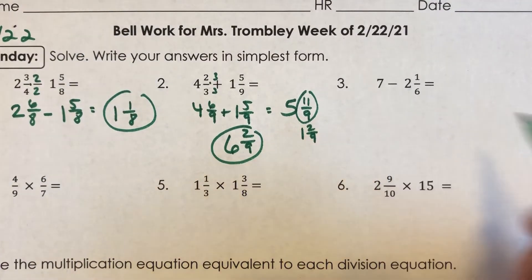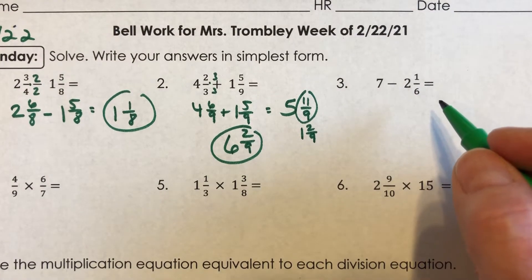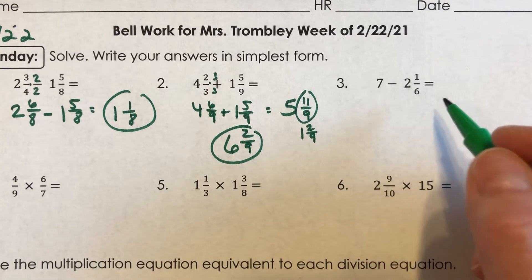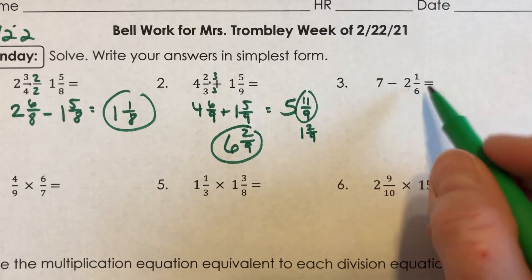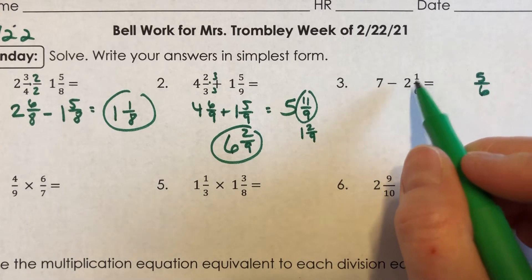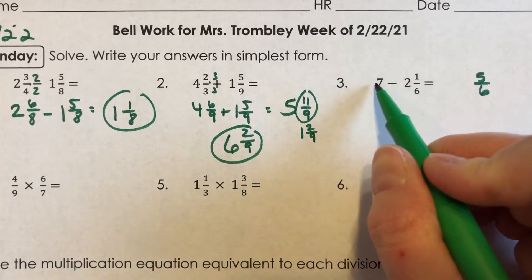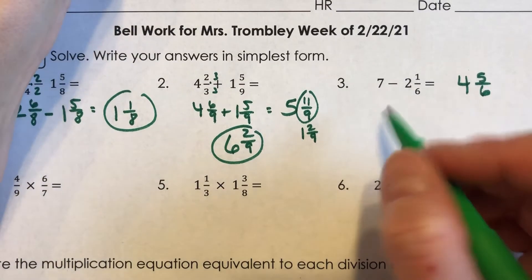For number three, seven minus two and one-sixth. Honestly, I would put this up as a number talk. And this is one that you could kind of count up with. Like, I know if I take one-sixth plus five-sixths, that gives me one whole. So then I'd be at three. And three plus four is seven. So four and five-sixths, that is what you could do in your head.